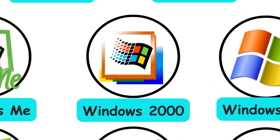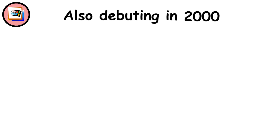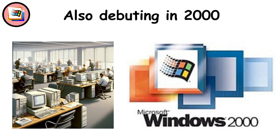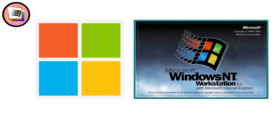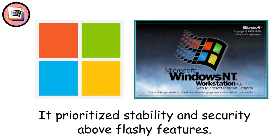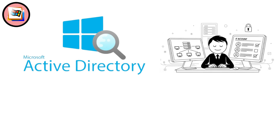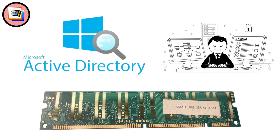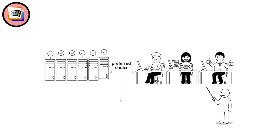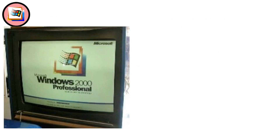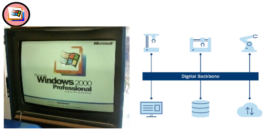Windows 2000, 2000. Also debuting in 2000 but aimed at corporate environments, Windows 2000 told a different story. Built on Microsoft's rock-solid NT kernel, it prioritized stability and security above flashy features. Active Directory transformed how IT departments managed networks and user accounts. Running comfortably on 64 megabytes of RAM, it became the preferred choice for servers and office workstations. While home users barely noticed it, Windows 2000 established the technical backbone that would support future mainstream releases.